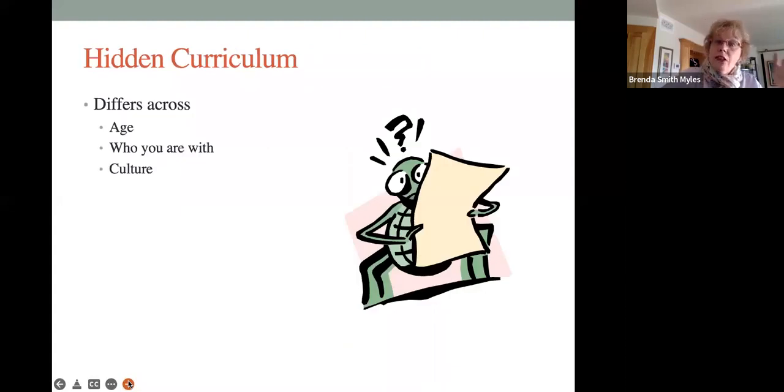Now, the hidden curriculum differs, as I said earlier, across a lot of variables. For example, the hidden curriculum differs across age. The unwritten rules that you know as a six-year-old may not apply when you are 17 or 18. For example, you are a six-year-old boy. And how do you express as a six-year-old boy how you like perhaps a six-year-old girl? Now, most of you know that you can express this as a six-year-old by hitting, chasing, or pulling hair. Now, most of you were not taught this directly, but you figured it out. And if you are a six-year-old, is this information important? The answer is absolutely.